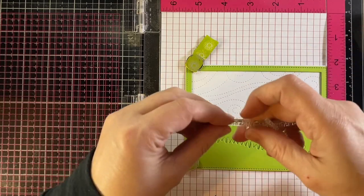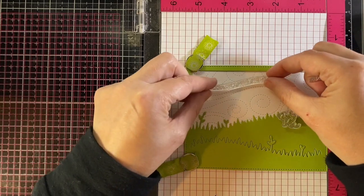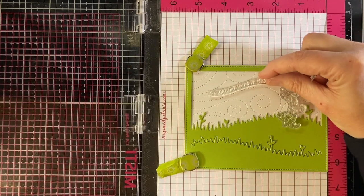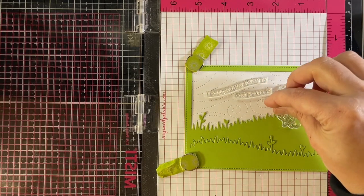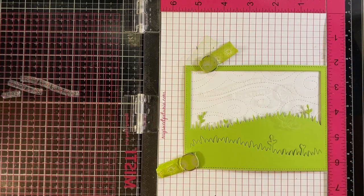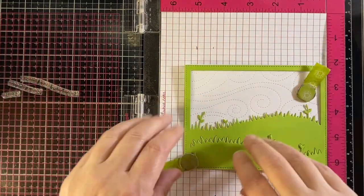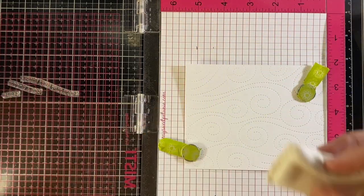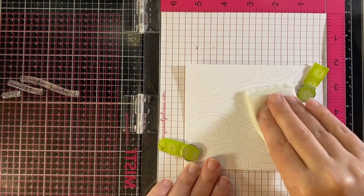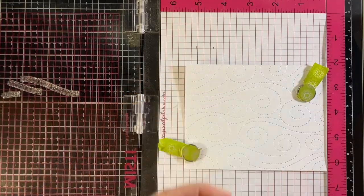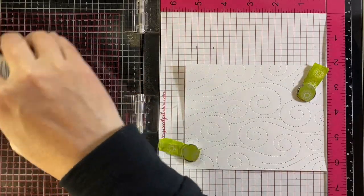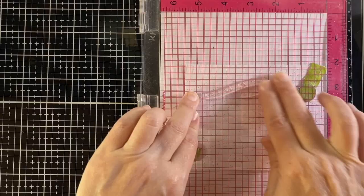I'm putting the meadow backdrop on top of the stitched windy backdrop so that I know what area I have to put those sentiment pieces together, positioning them so they look like they're blowing along with the lines in the background. Putting some anti-static powder on there and some clear ink because I'm going to white heat emboss this.